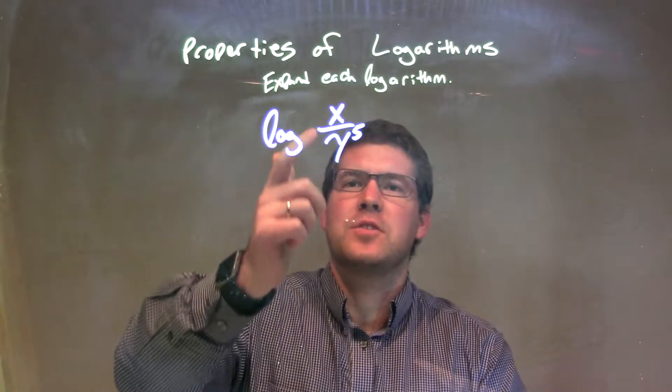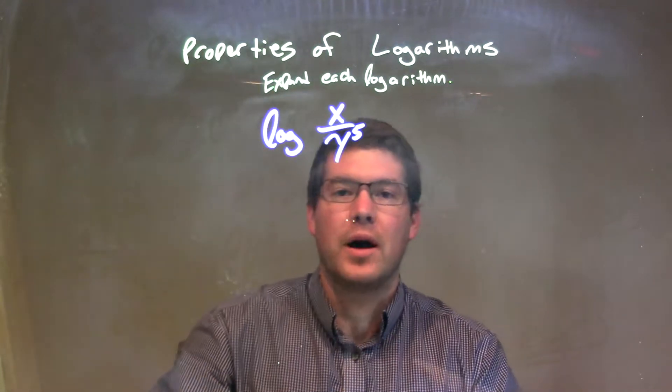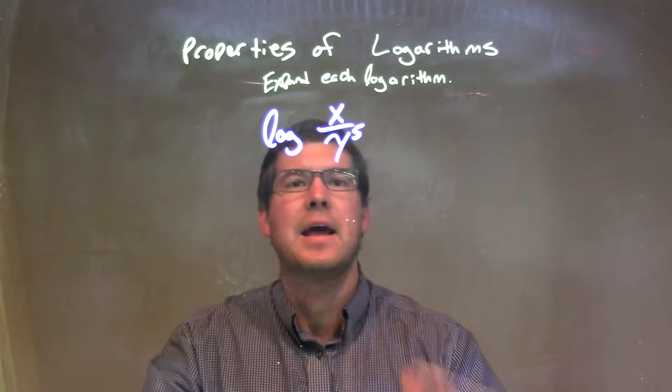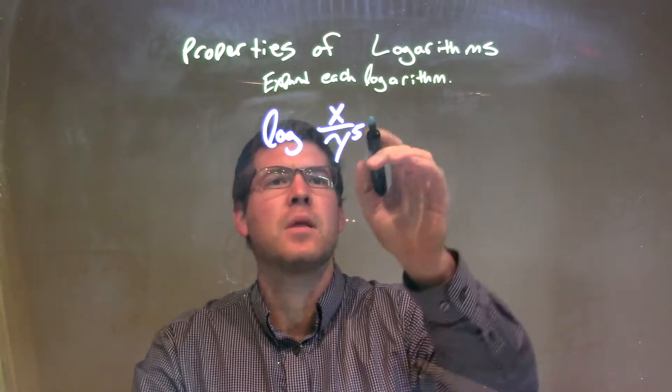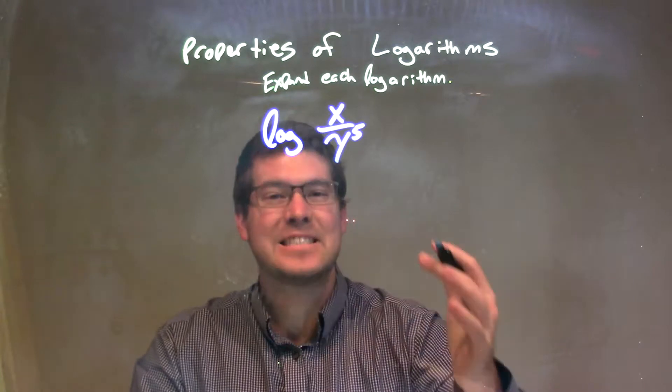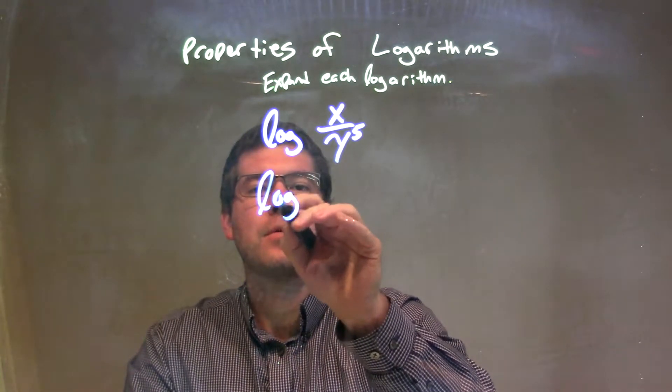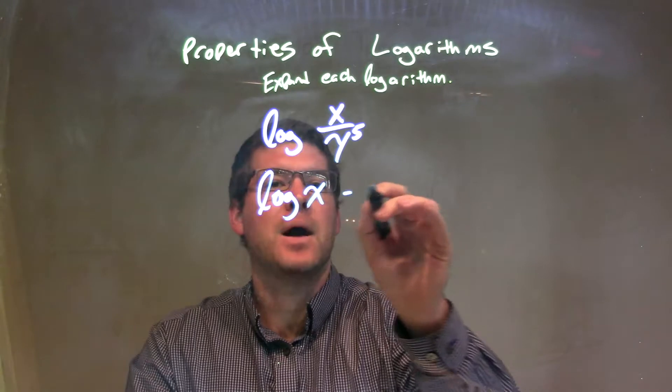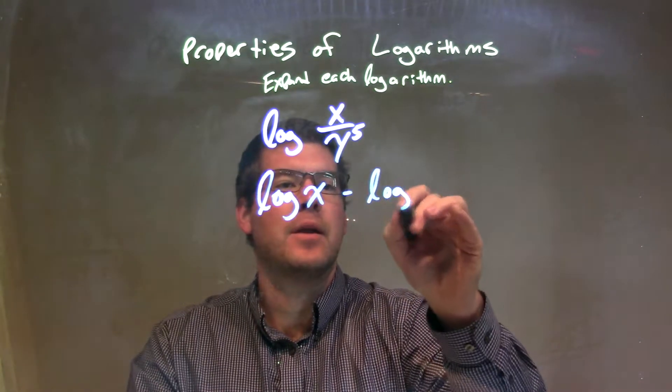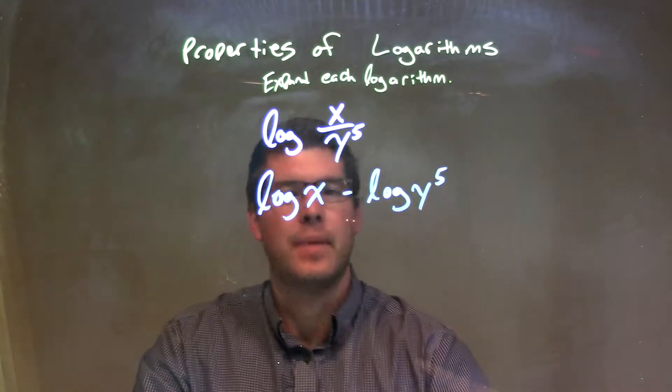We see that division going on between x and y to the fifth power, right? That division is the same thing as subtraction when we expand. So, we have log of the numerator, x, minus log of the denominator, y to the fifth power.